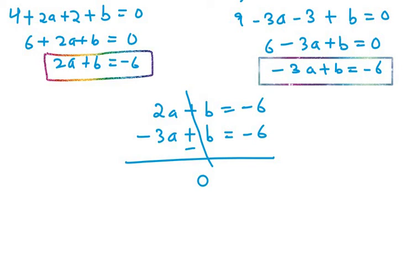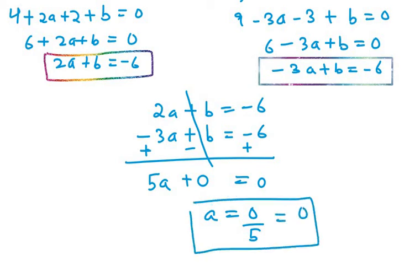So 2a minus becomes plus here now. So 2a + 3a will be 5a. Then here it will be plus, so -6 + 6 will be 0. So a = 0/5. So 0/5 is nothing but 0. So in this case we get a value as 0.